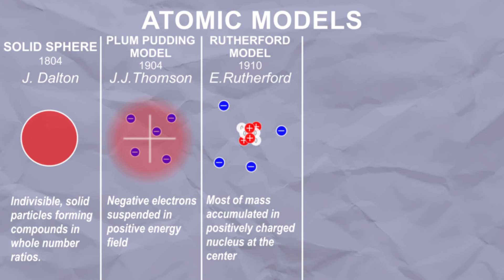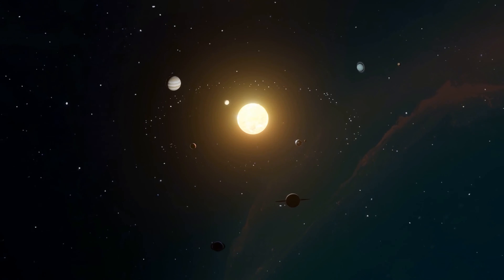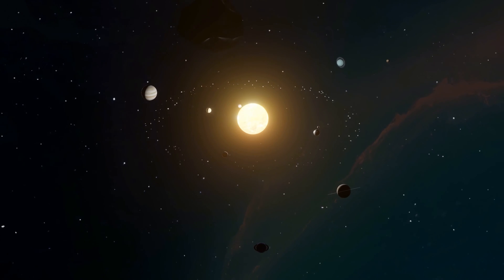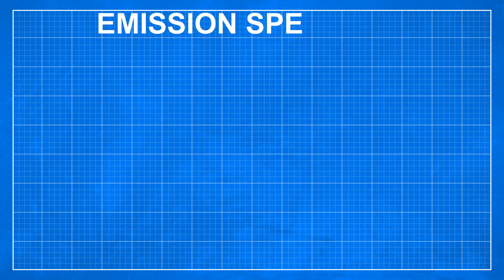Then, a few years later in 1913, Bohr and Rutherford created the most widely known model of the atom — the Bohr model. At the center we have a tiny and dense nucleus, surrounded by electrons moving in orbits with fixed sizes and energies, similar to our solar system. But instead of gravity, it is bound by electrostatic force.